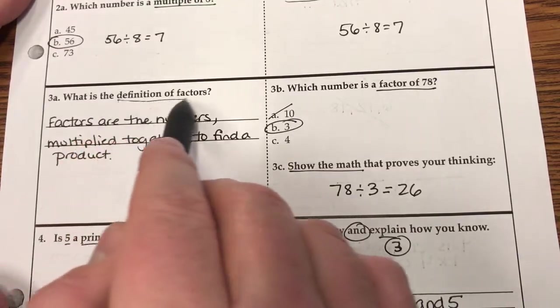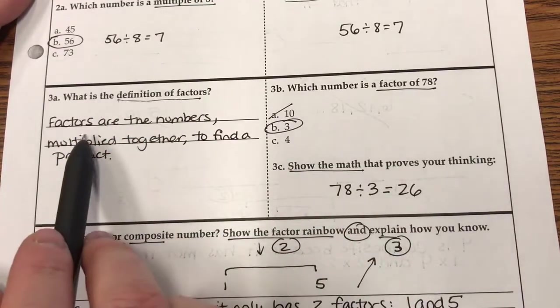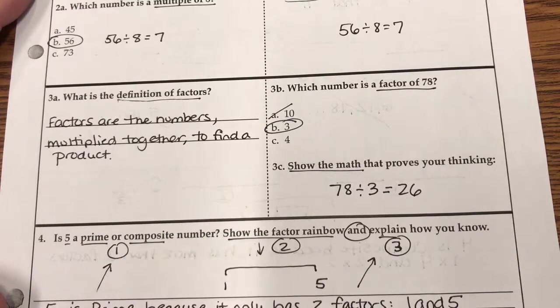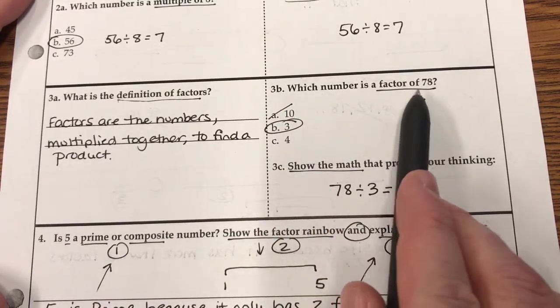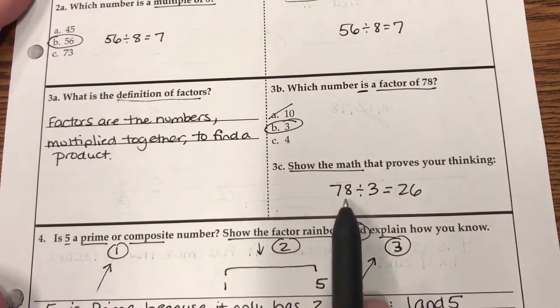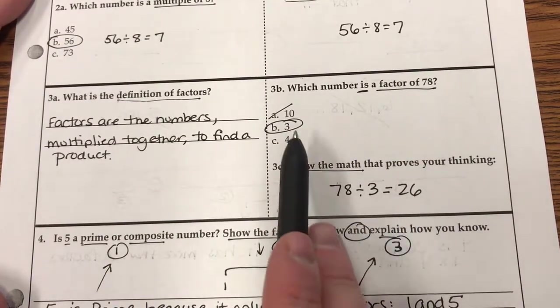What's the definition of factors? Underline important info. Factors are the numbers multiplied together to find a product. All right, which number is a factor of 78? So I showed the math to prove it, and there's my answer.